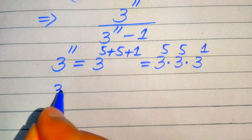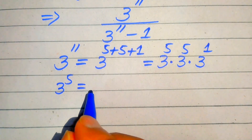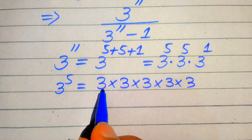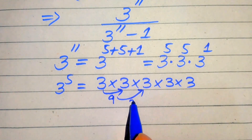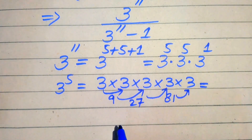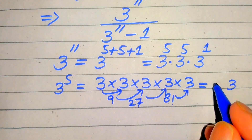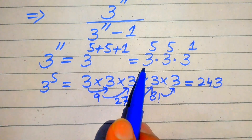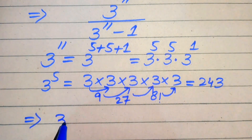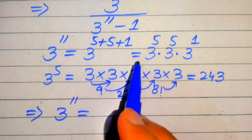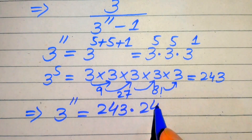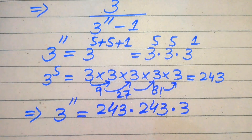First we find the value of 3 to the power of 5, which means multiplying 3 five times. So: 3 times 3 is 9, 9 times 3 is 27, 27 times 3 is 81, and 81 times 3 is 243. So 3 to the power of 5 equals 243. Substituting this value, 3 to the power of 11 equals 243 multiplied by 243 multiplied by 3.